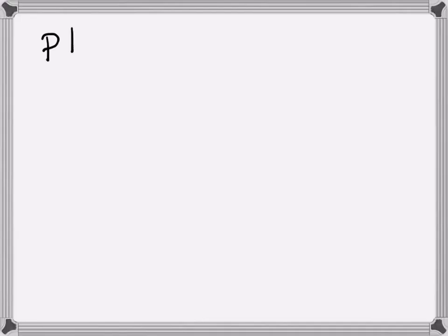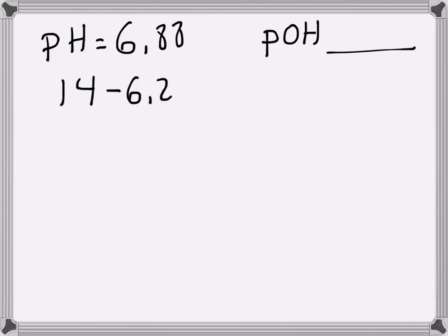We'll use those equations now. Let's start with an example where you're given the pH. We'll use one of the examples from the chapter notes I'll be giving you this week. The pH is equal to 6.88. We want to find the pOH first, so I take 14 and subtract 6.88 from it, and I get 7.12. If you add those two together you get 14, so the pOH is 7.12.